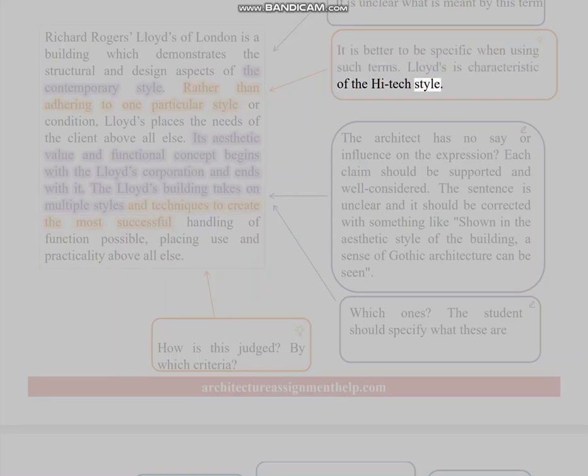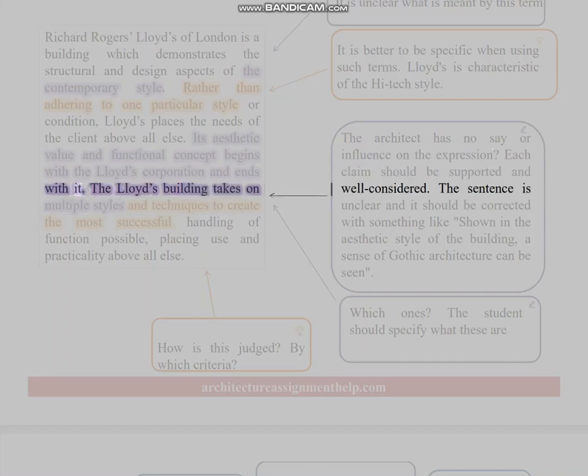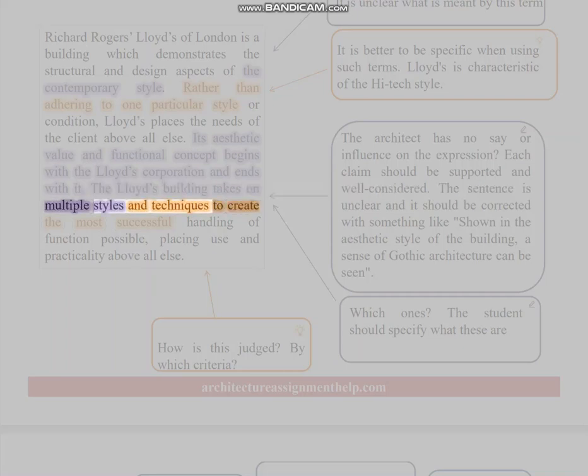Lloyd's is characteristic of the high-tech style. The architect has no say or influence on the expression. Each claim should be supported and well-considered. The sentence is unclear and it should be corrected with something like: shown in the aesthetic style of the building, a sense of Gothic architecture can be seen. Which ones? The student should specify what these are. How is this judged? By which criteria?